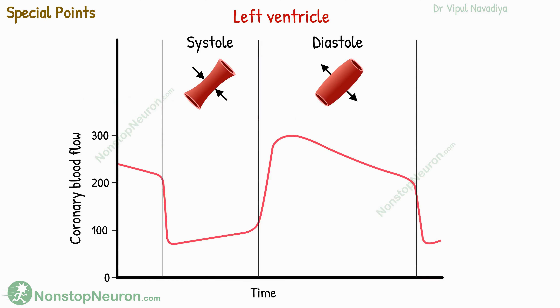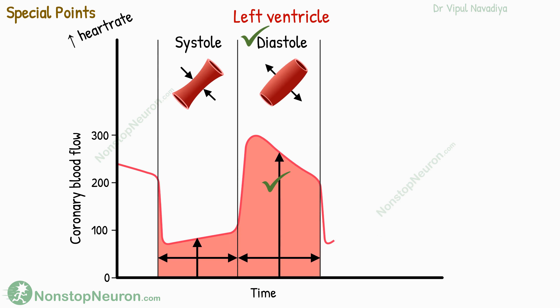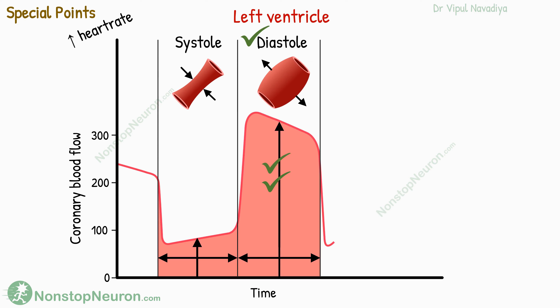Third, in the left ventricle, blood flow is high during diastole, and normally the duration of diastole is longer than systole, so most blood flow occurs during diastole. When there is an increase in heart rate, the duration of diastole shortens more than that of systole, which tends to reduce total blood flow. However, this is compensated by adequate dilation of vessels in response to metabolic signals, so the blood flow is not compromised.